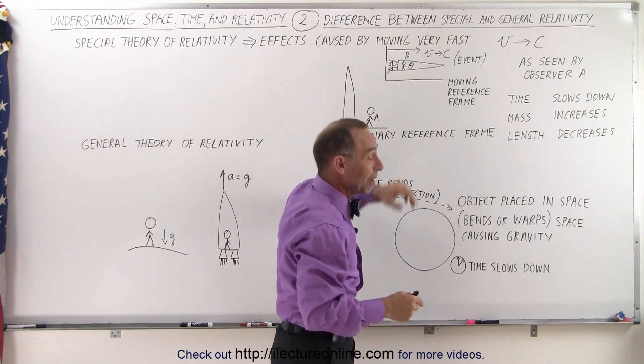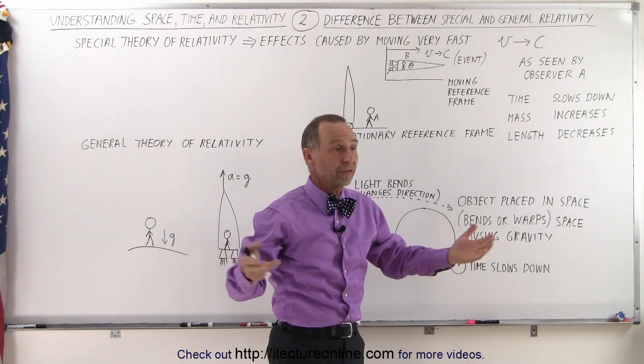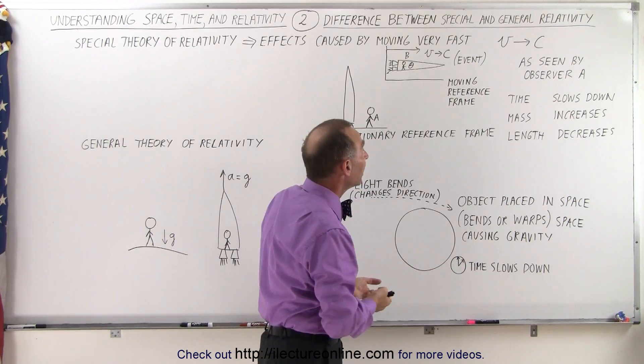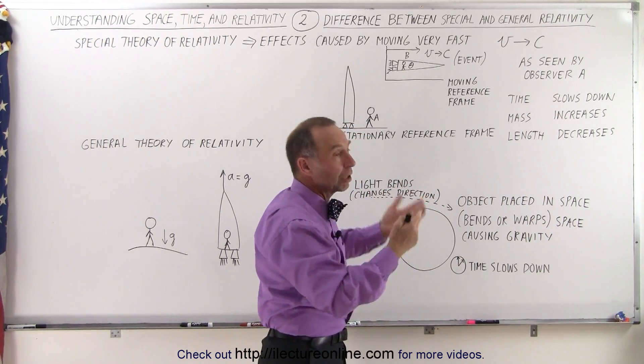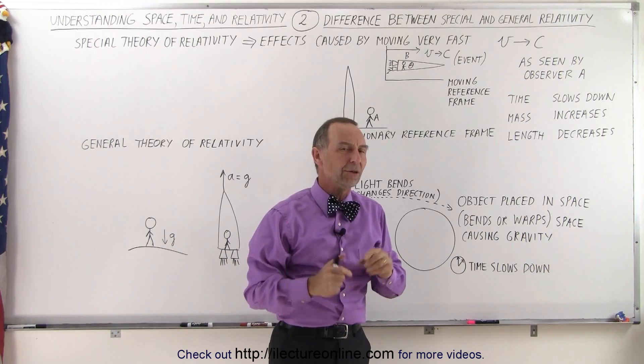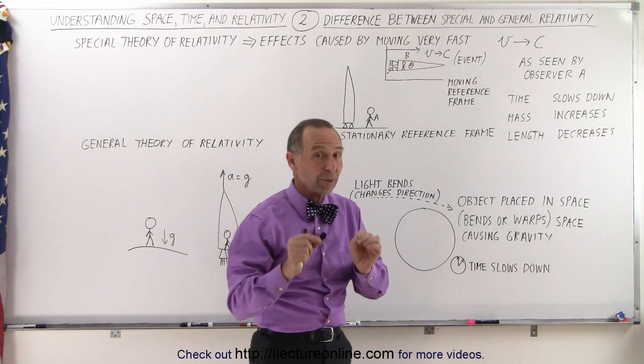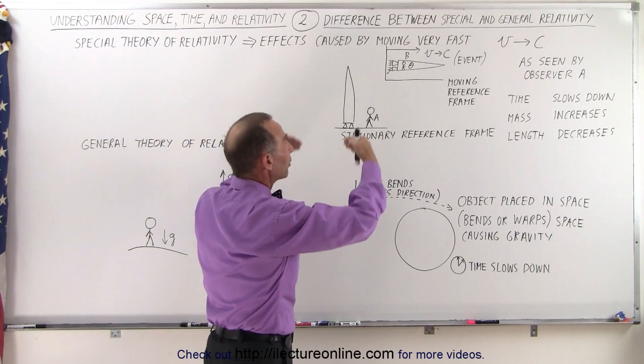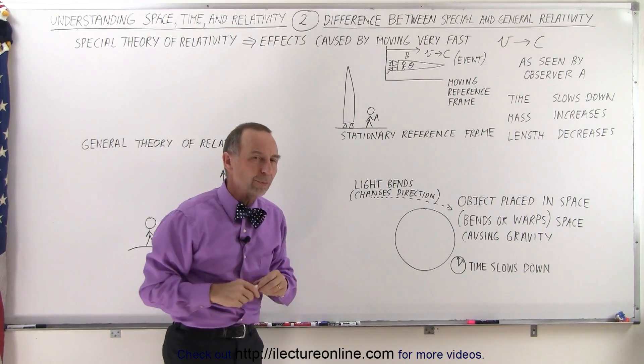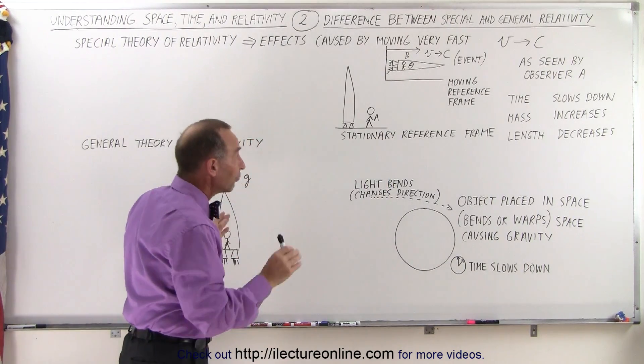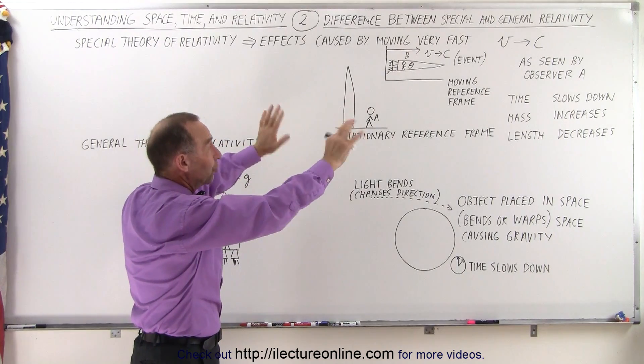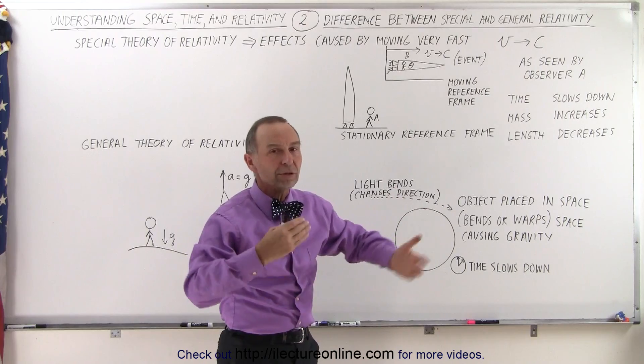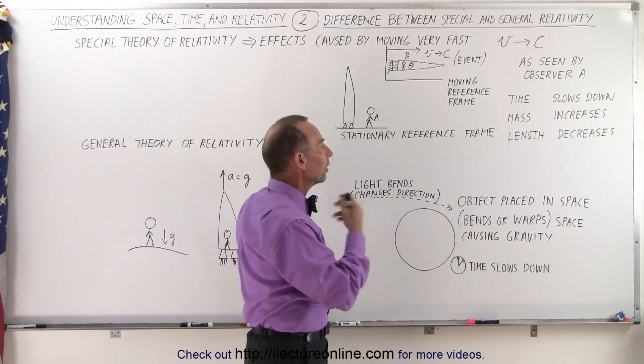However, the person on the moving reference frame looks at all that and says there's no difference. The spaceship is still the same length, the time is still acting normally, and the mass, well, nothing seems to have changed there as well. So again, that's what we mean by the special theory of relativity. It depends upon who's observing and what they're observing, and from what perspective they're observing things. And of course, none of that would be so if the spaceship moved very slowly. Then there would be no difference in time, mass, or length.